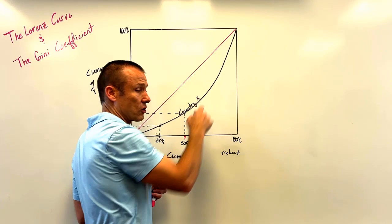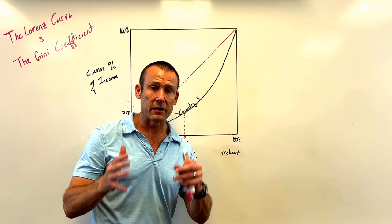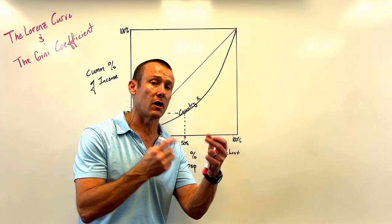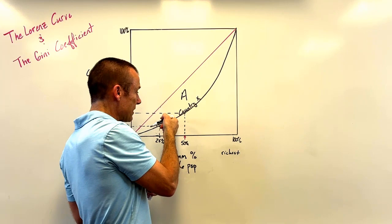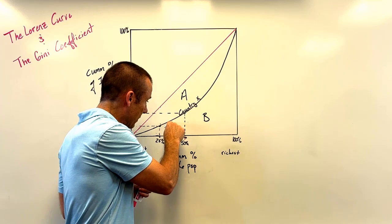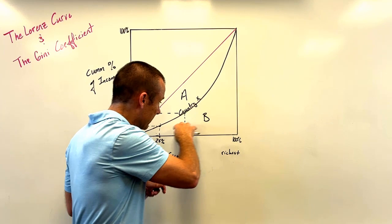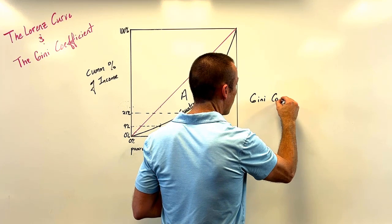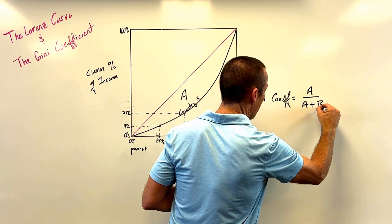So that is the Lorenz curve — a simple way to depict income inequality of a country with a single line. Now for the Gini coefficient, which is based on this graph. We define area A as the area between the Lorenz curve and the perfect equality line, and area B as the area between the Lorenz curve, the horizontal axis, and the vertical axis. The Gini coefficient equals A divided by A plus B.